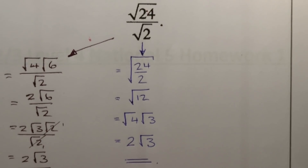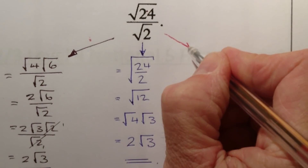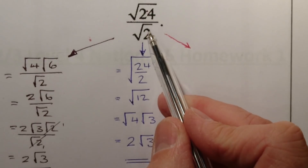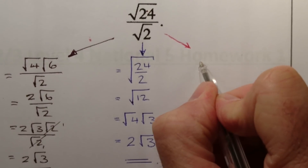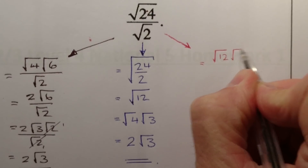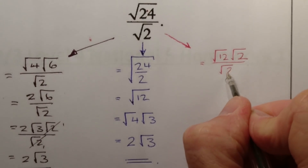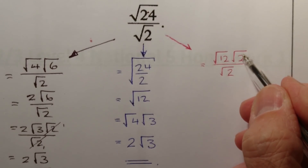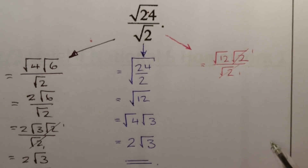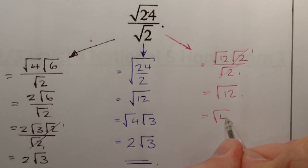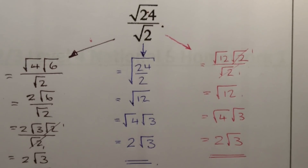A third method: break root 24 into root 12 times root 2, since 12 times 2 is 24. Neither is a square number, but this helps get rid of the root 2 on the bottom. With root 2 on both top and bottom, divide both by root 2, leaving root 12. Then simplify root 12 to root 4 times root 3 = 2 root 3. Same answer again. Pick whichever strategy you know best.